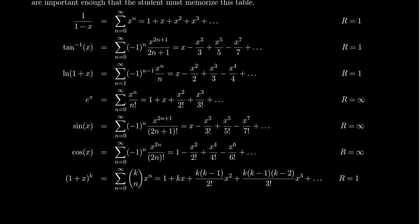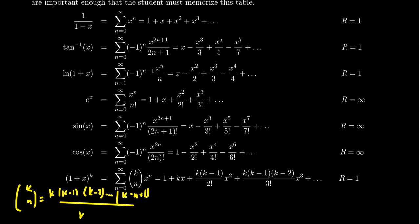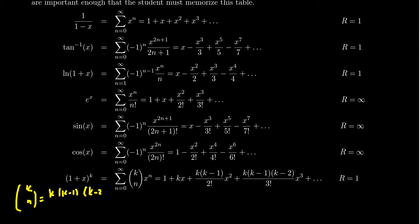Most recently, we discovered the binomial series, useful when you have a function of the form 1 plus x to the k, where k is any real number. The series is the sum from n equals 0 to infinity of the binomial coefficient k choose n times x to the n, where k choose n equals k times k minus 1 times k minus 2, all the way to k minus n plus 1, over n factorial. Its radius of convergence is 1. These Maclaurin series on screen are ones you'll want to memorize — put them on a note card or reference sheet.